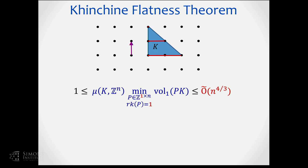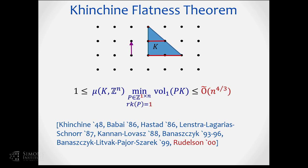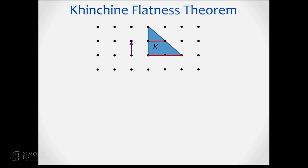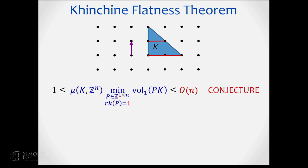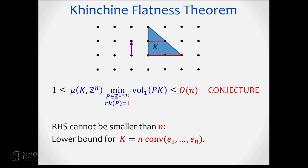Flatness theorems quantify how flat the body can be. The first studied case is rank-1 projection — just an integer vector. After a lot of work by many researchers, we can bound it by a polynomial in dimension: n to the 4/3 times some poly-logarithms. There is a conjecture that the correct right-hand side should not be n to the 4/3 but just n, and if so, it's tight — you can take a simplex scaled up by n as a tight example.